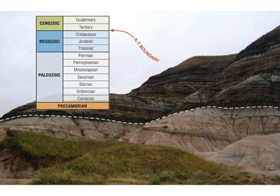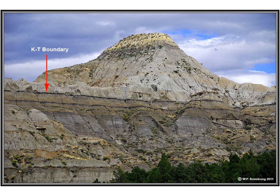This is what I call the KT or KPG boundary. Why do we call it KPG when Cretaceous starts with C? Because we have to use K for Cretaceous — that's the symbol it gets, because Cambrian already has C. It will formally be called the Cretaceous-Paleogene boundary, KPG. But I will often refer to it as the KT boundary, and you will see it referred to as the KT boundary — so you should know both.